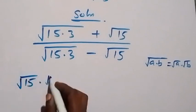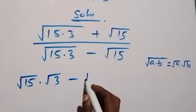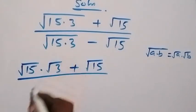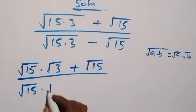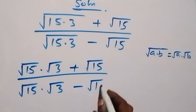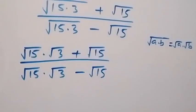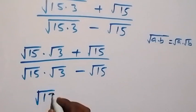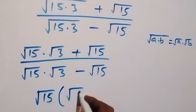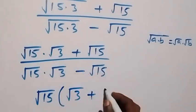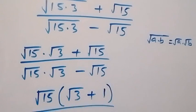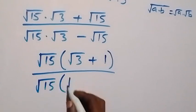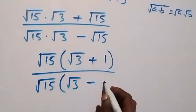This becomes root 15 times root 3, then plus root 15, up over root 15 times root 3, then minus root 15. From here we have root 15 common, so when we factor root 15 out, this becomes root 15 times bracket (root 3 plus 1) over root 15 times bracket (root 3 minus 1).